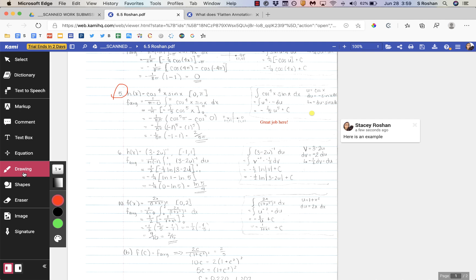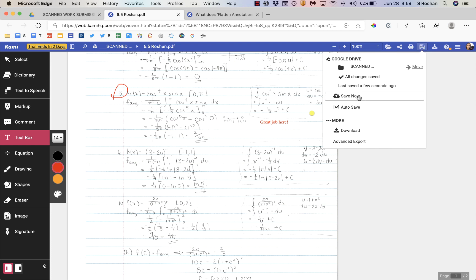My recommendation is to just stick with the drawing and the text boxes for that reason, because then all you have to do is save it, and then students do not need the Kami app.